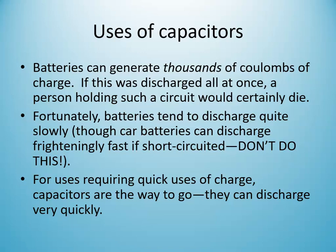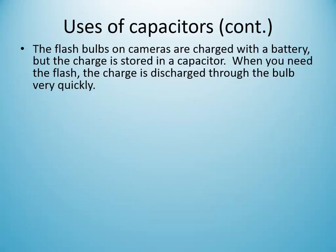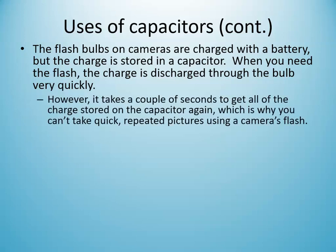Batteries can generate thousands of coulombs of charge but do so very slowly; otherwise they'd explode. Car batteries with low internal resistance can discharge very fast if short-circuited — a dropped wrench across battery terminals can glow white hot almost instantly. Capacitors, by contrast, can release charge very quickly. Camera flash bulbs charge from a battery but store charge in a capacitor, which discharges rapidly through the bulb — that's why you can't take many flash photos all at once.